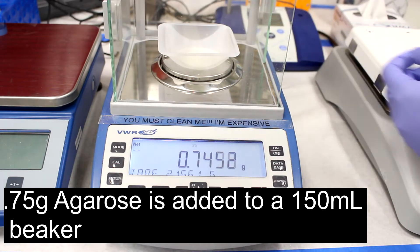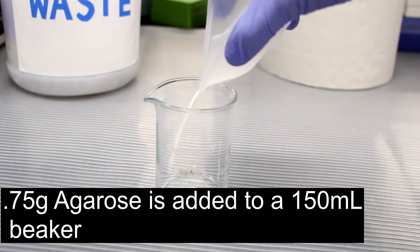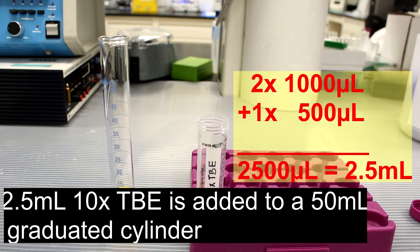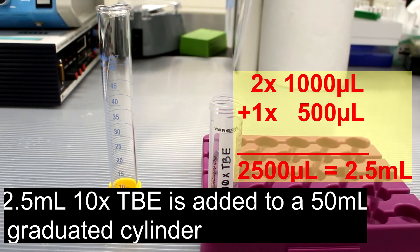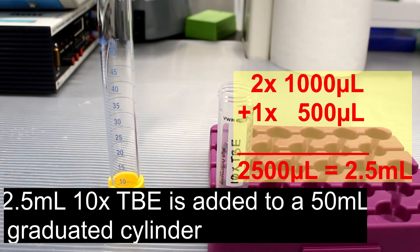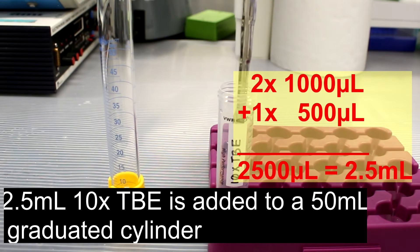To make the agarose gel solution, 0.75 grams of agarose is added to a 250 milliliter beaker. To the graduated cylinder, 2.5 milliliters of 10x TBE is added.